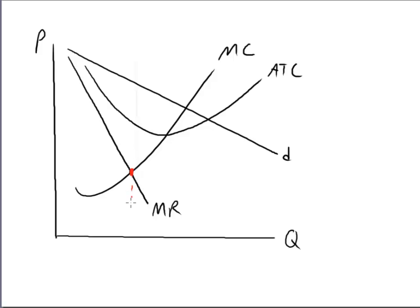The firm will produce that quantity because that is where it can make the most profits or the least losses. In any case, it's the best production at this point, that quantity.